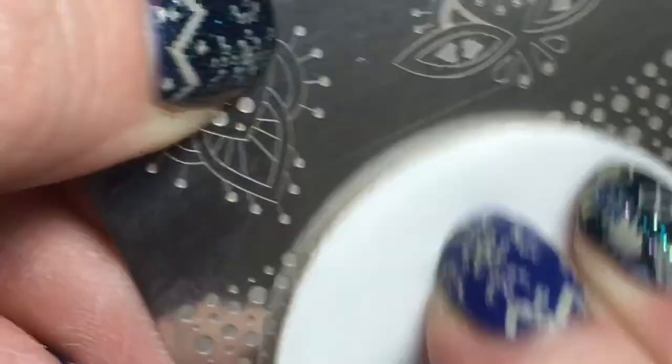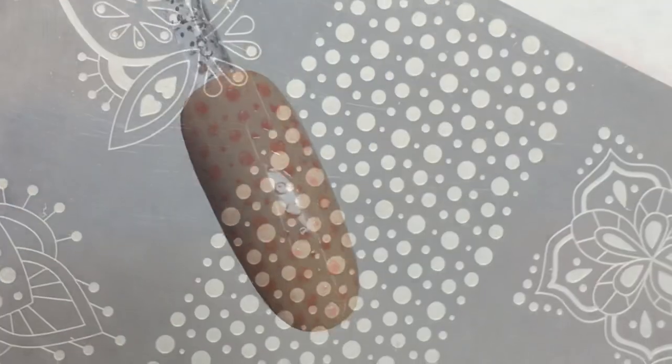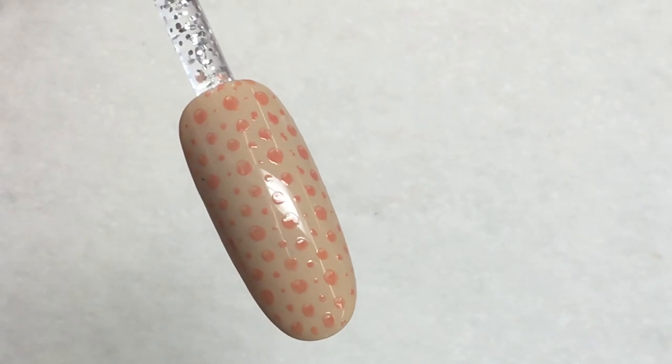Make sure you clean off your stamper with a lint roller or piece of tape to prevent damage to the clarity, and clean off your stamping plate with alcohol if you're using gel polish, or an acetone-based remover if you're using nail polish.